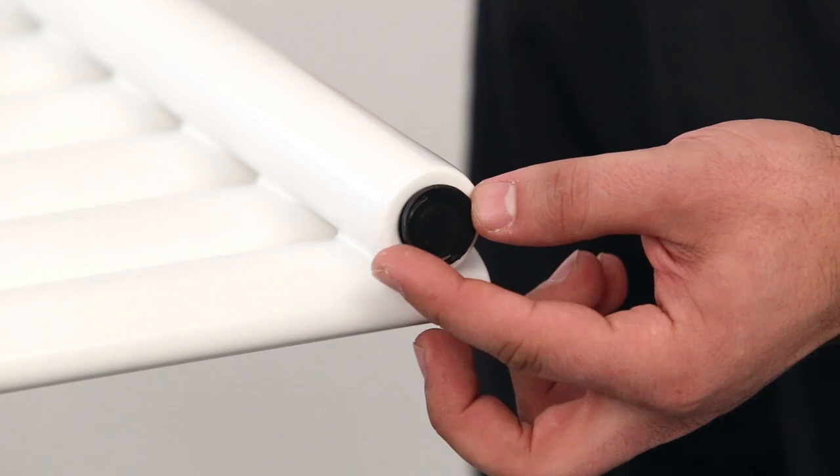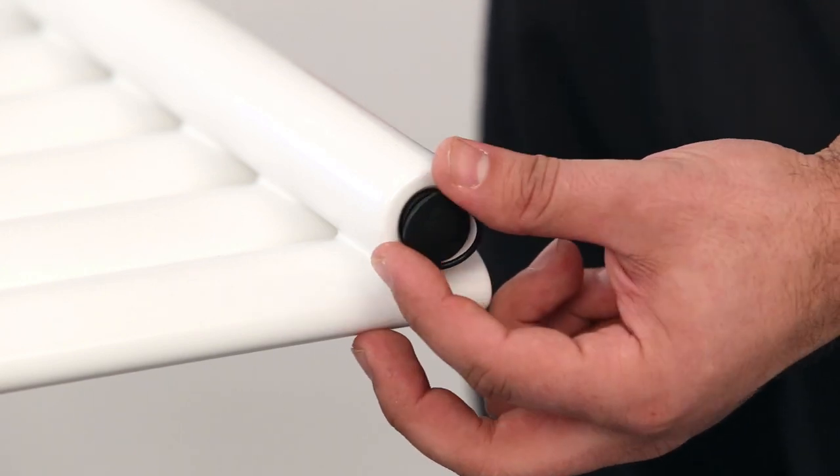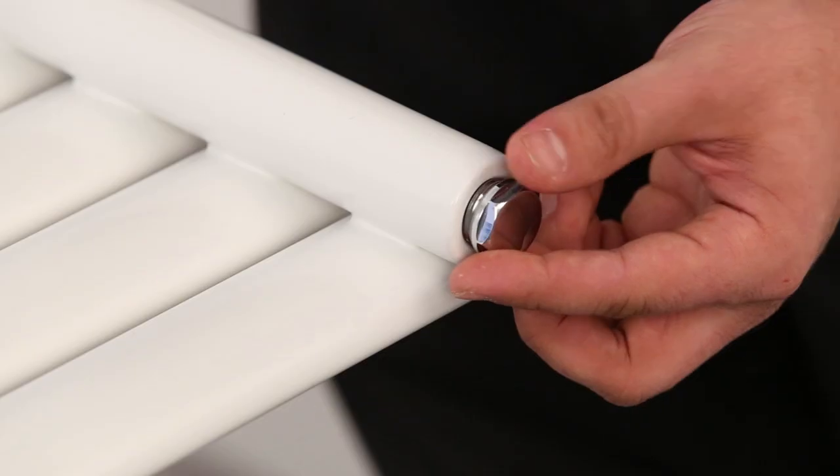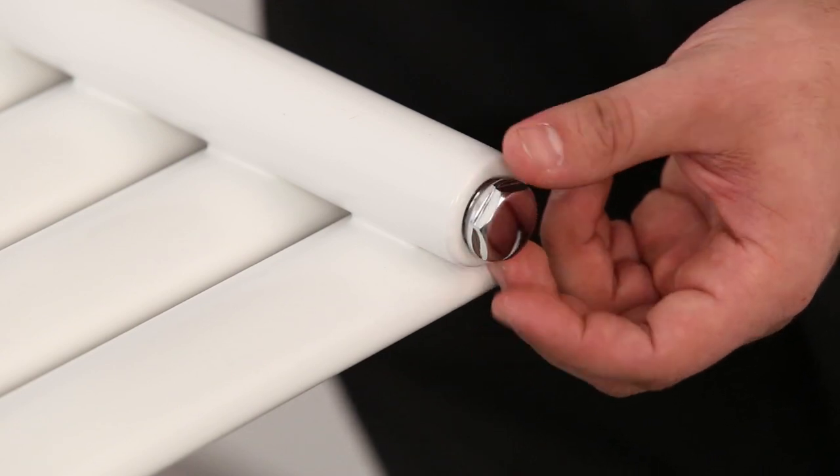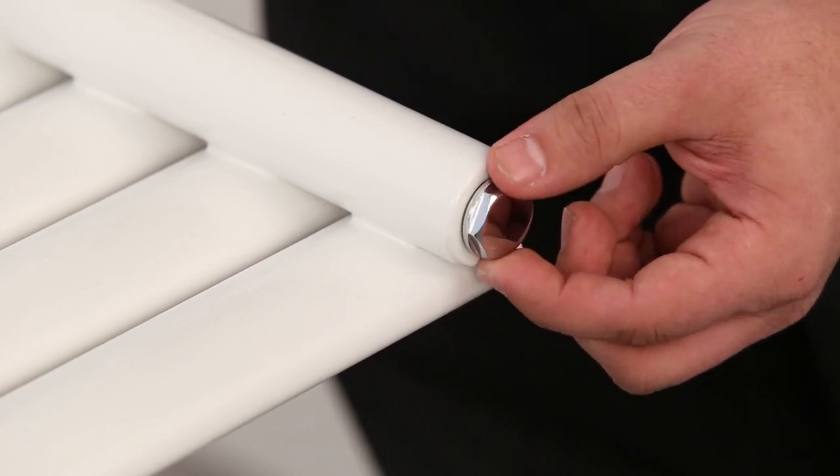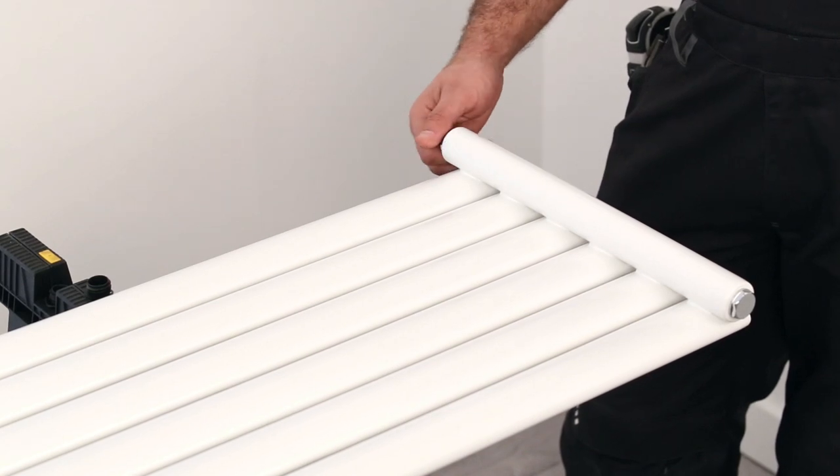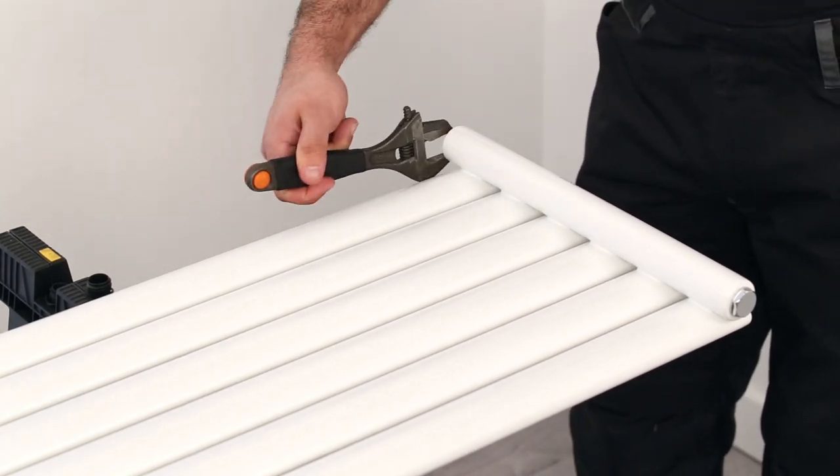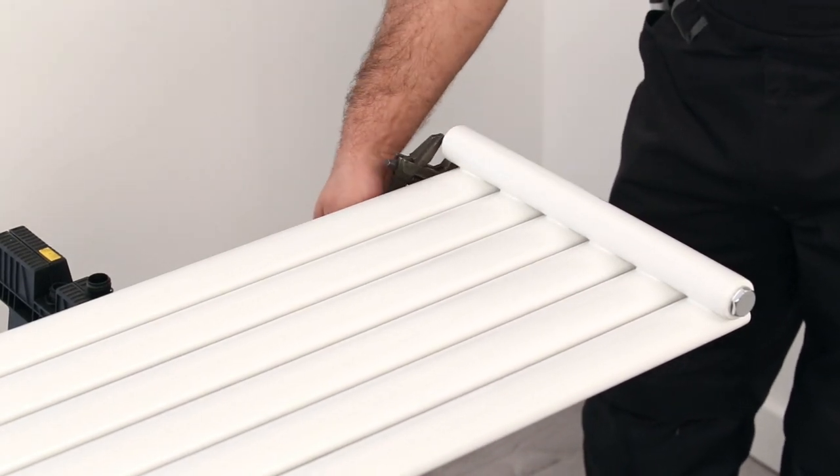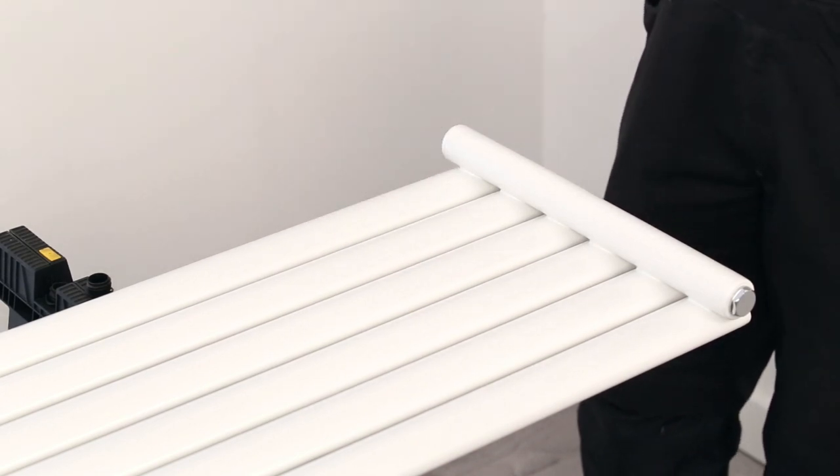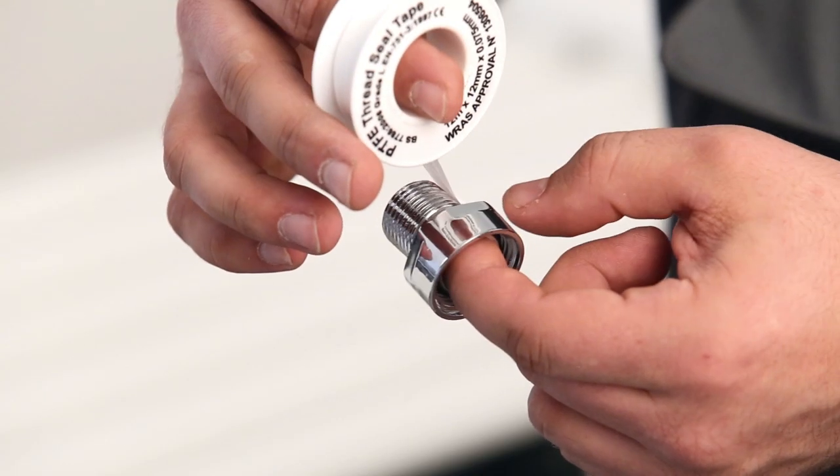To begin, place the radiator face down and remove the blanking caps from each valve. Insert the supplied metal blanking cap and bleed valve. Make sure this is at the top of the radiator before you move on. The bleed valve needs to be at the most convenient access point side of the radiator, just in case you need to bleed it in the future.